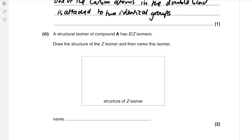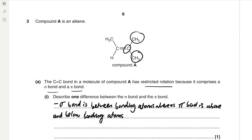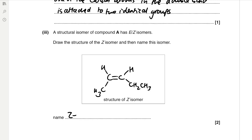A structural isomer of compound A has EZ isomers. Draw the structure of the Z isomer and name it. Compound A has five carbons, so we make a five-carbon chain with the double bond at position 2, ensuring two different groups on each carbon of the double bond. For the Z isomer, the groups of highest Cahn-Ingold-Prelog priority are on the same side of the double bond, giving a CH₂CH₃ group on that side. The name is Z-pent-2-ene.